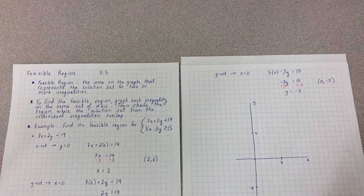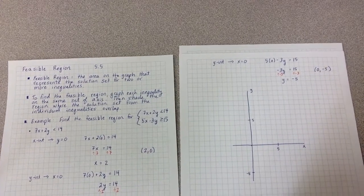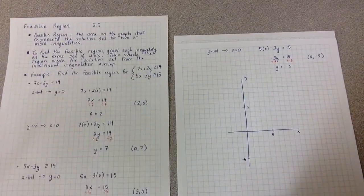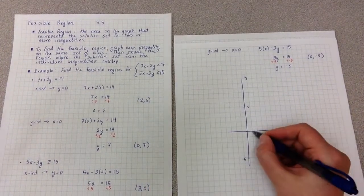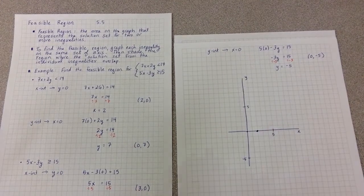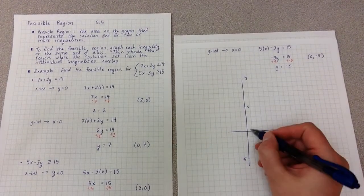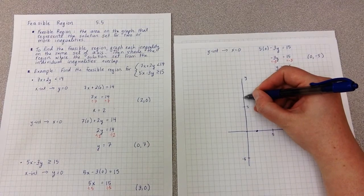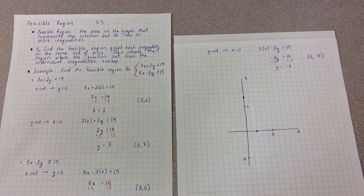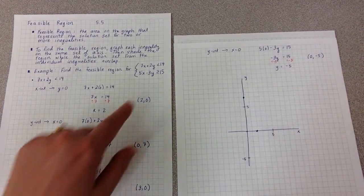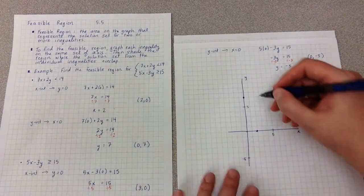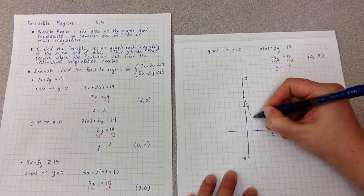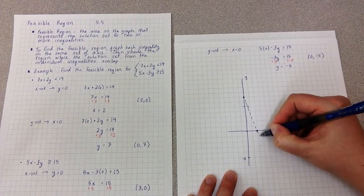So I now have 4 points. Two points to graph from the first line and two points to graph from the second line. For the first line, the two points are 2, 0, that's over 2, up 0, and 0, 7, that's over 0, up 7. Now's the time when I look at the inequality. The inequality for this equation is a less than, which means the line connecting these two points is going to be a dashed line.